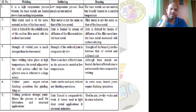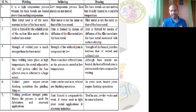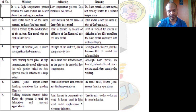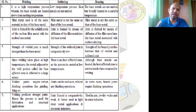In brazing, although the base metals are heated, the heat affected zone is not as large as in welding because brazing temperatures lie between soldering and welding. The area surrounding a brazed joint is influenced, but not to the same extent as welding since the temperature does not reach welding levels. The heat affected zone in brazing lies between that of soldering and welding.